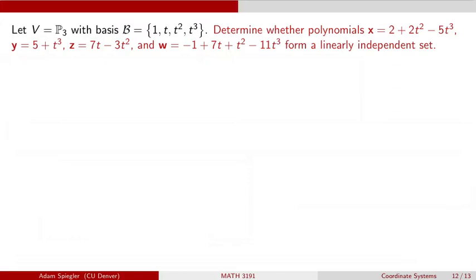So let's say I've got my vector space V is P3. So this is the set of all polynomials that have degree at most 3. And we have a sort of standard basis for this vector space, which consists of four vectors: 1, T, T squared, and T cubed.